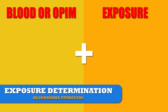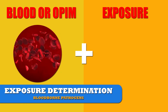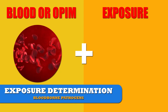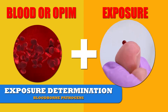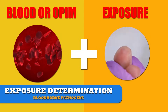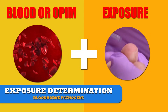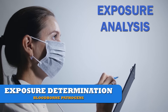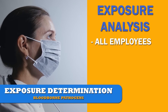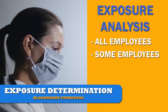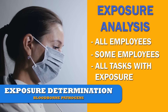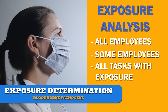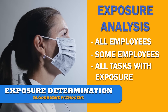Determining if you have occupational exposure is simple. If your job task includes blood or other potentially infectious materials and you can be exposed to them, you have occupational bloodborne pathogen exposure. The employer must perform an analysis to determine job classifications where all employees have exposure, classifications where some employees have exposure, and a list of all tasks and procedures that include occupational exposure.